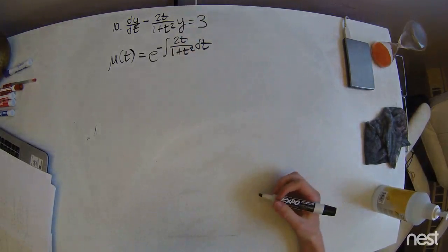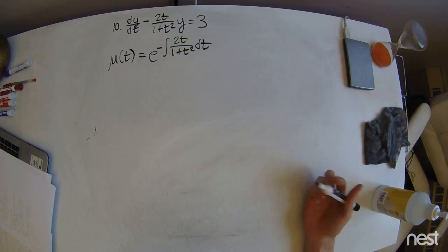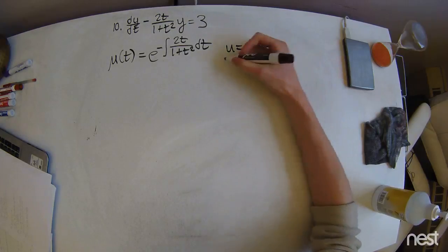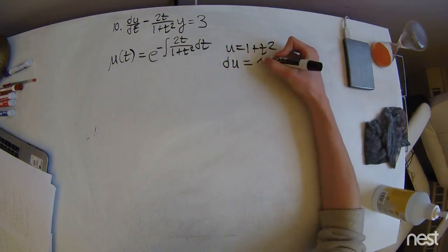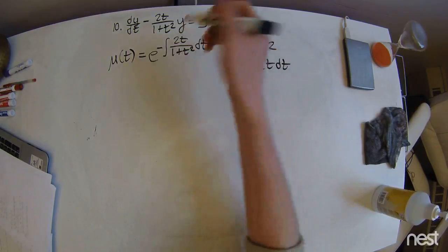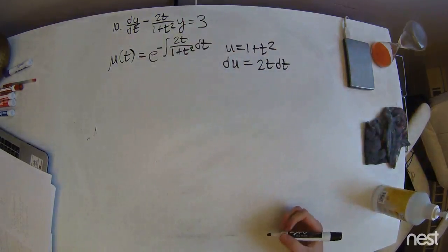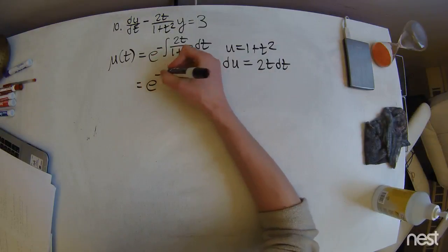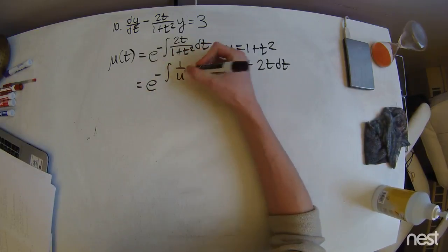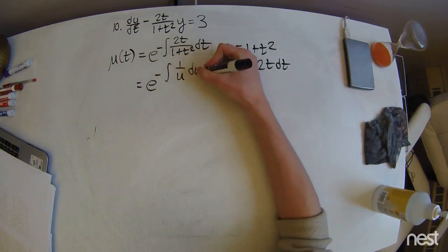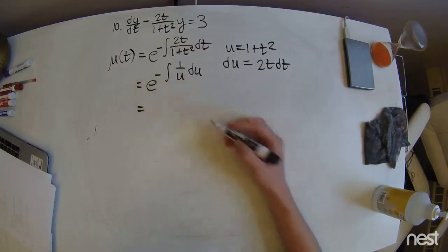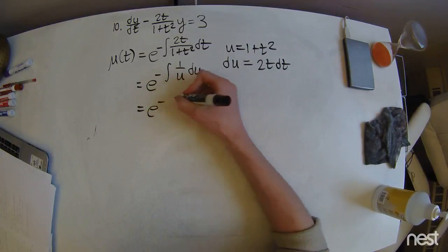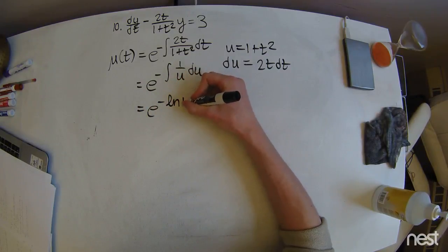This isn't too bad of an integral. We're just going to use u-substitution, where u is going to equal 1 plus t squared, and du equals 2t dt. We can see we already have that in the equation, so we can substitute in. This is actually equal to e to the negative power of 1 over u, which is just going to be equal to e to the negative natural log of u.